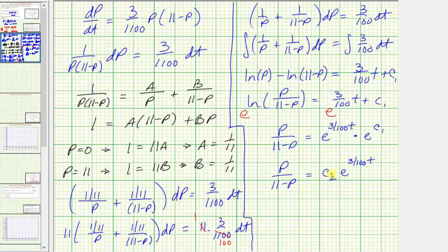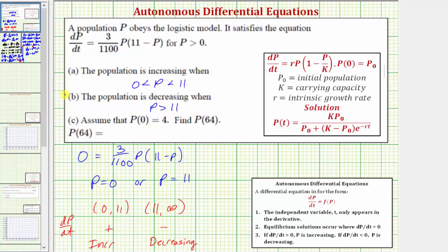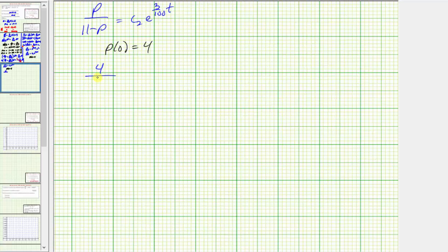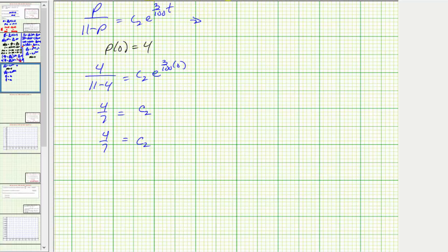Before going further, let's use the initial condition to find c₂. We were told p of zero equals four. Substituting four for p and zero for t, we get four divided by the quantity 11 minus four equals c₂ times e raised to zero. So four-sevenths equals c₂. Substituting four-sevenths for c₂, we have p divided by the quantity 11 minus p equals four times e raised to the power of three one-hundredths t divided by seven.